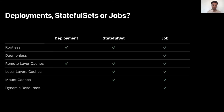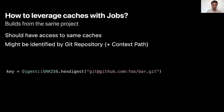Jobs are probably the best fit, as shown in the comparison table. To leverage caches with jobs, the first thing we want to do is find a way to identify similar builds — builds from the same project — because those are the builds that should share caches. What we're looking for is basically a cache key, which is usually a project name, or a git repository combined with the context path. Basically any key that makes sense to you.